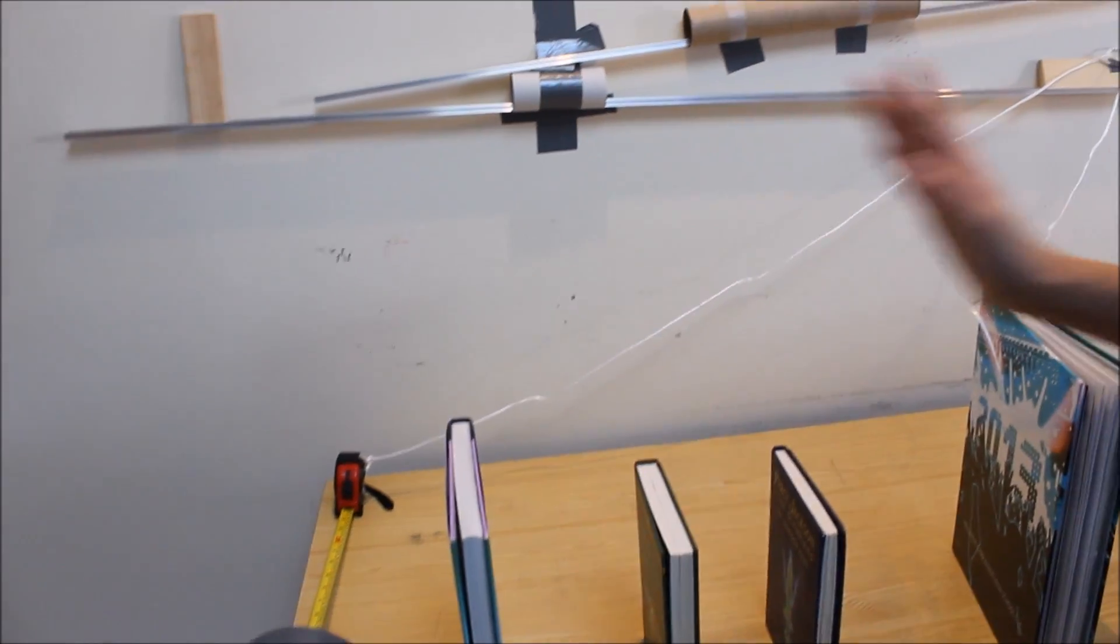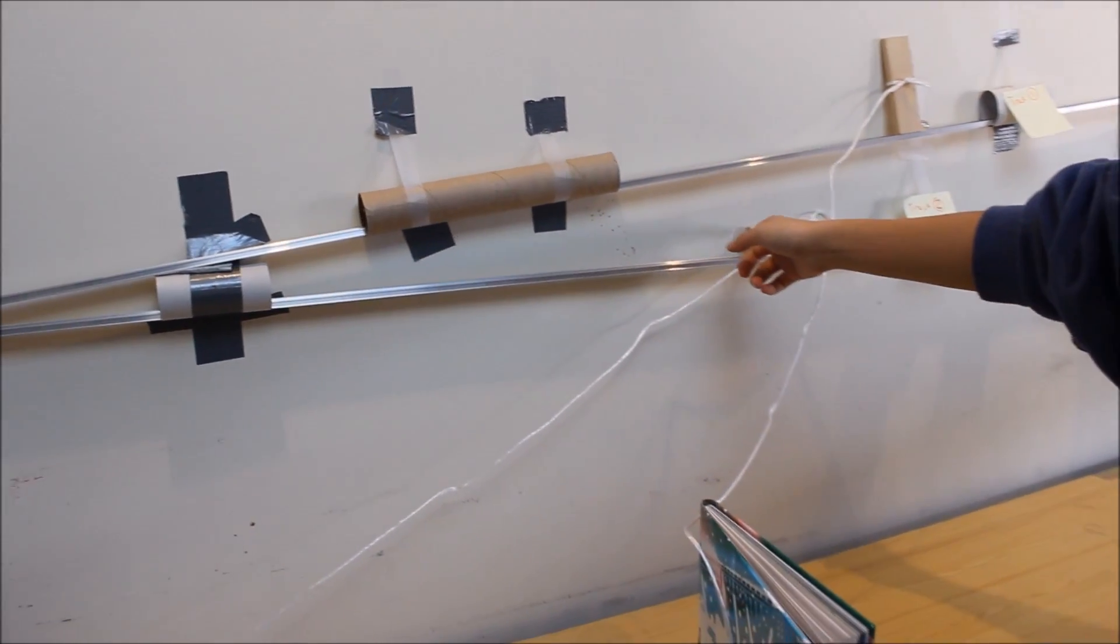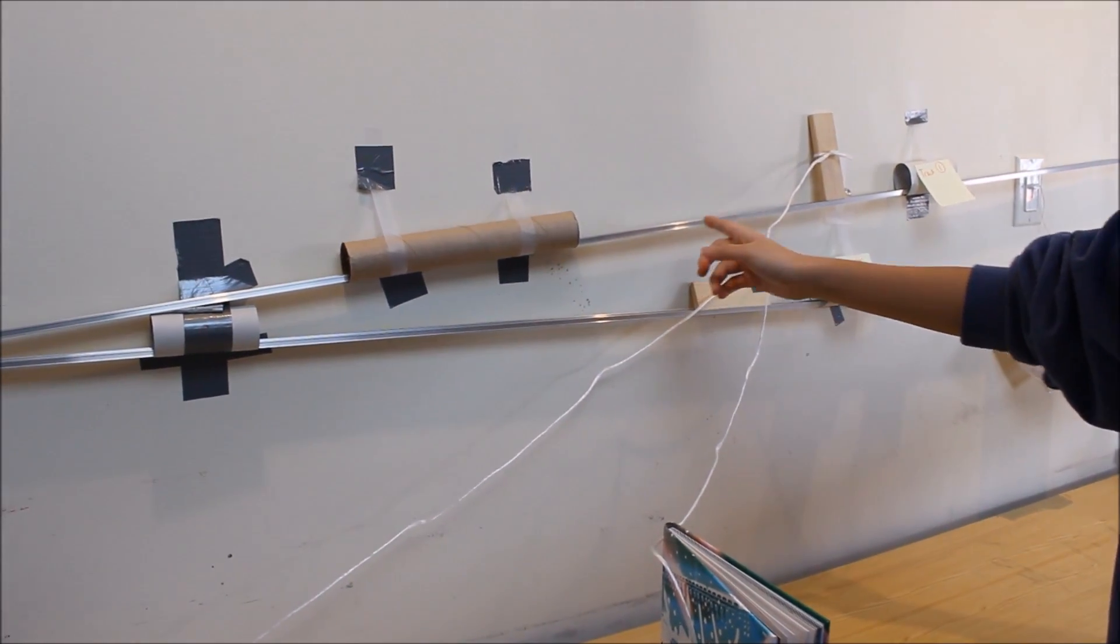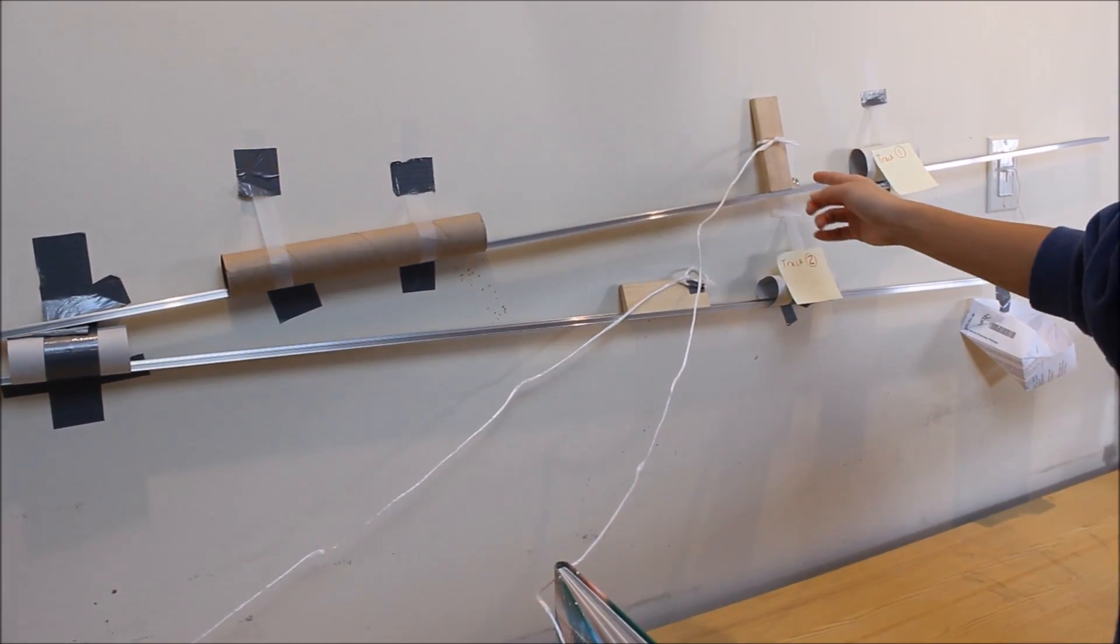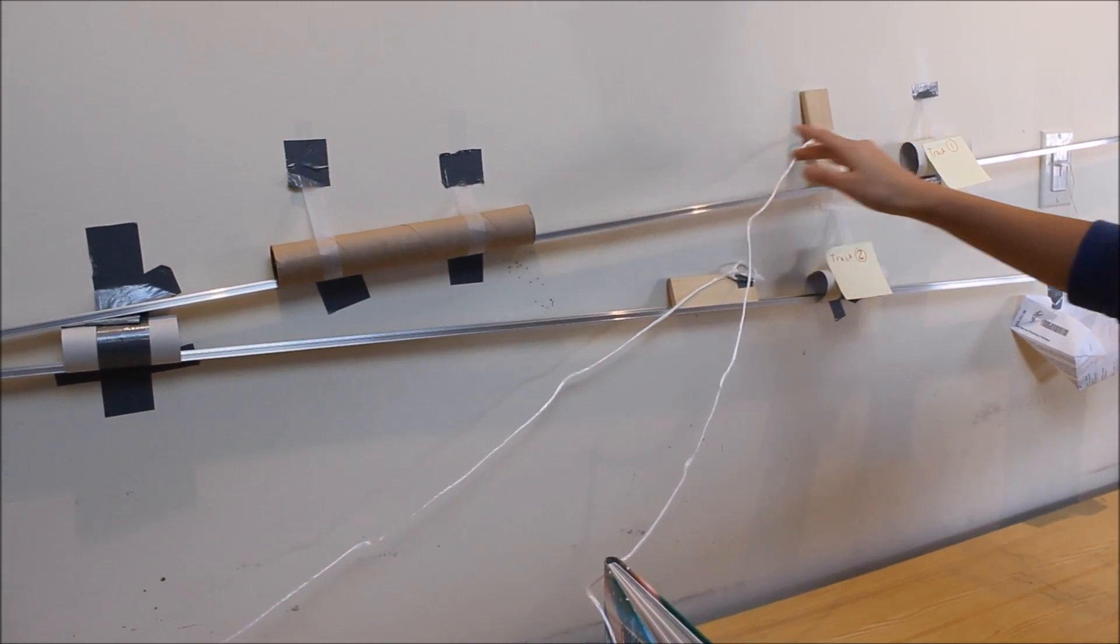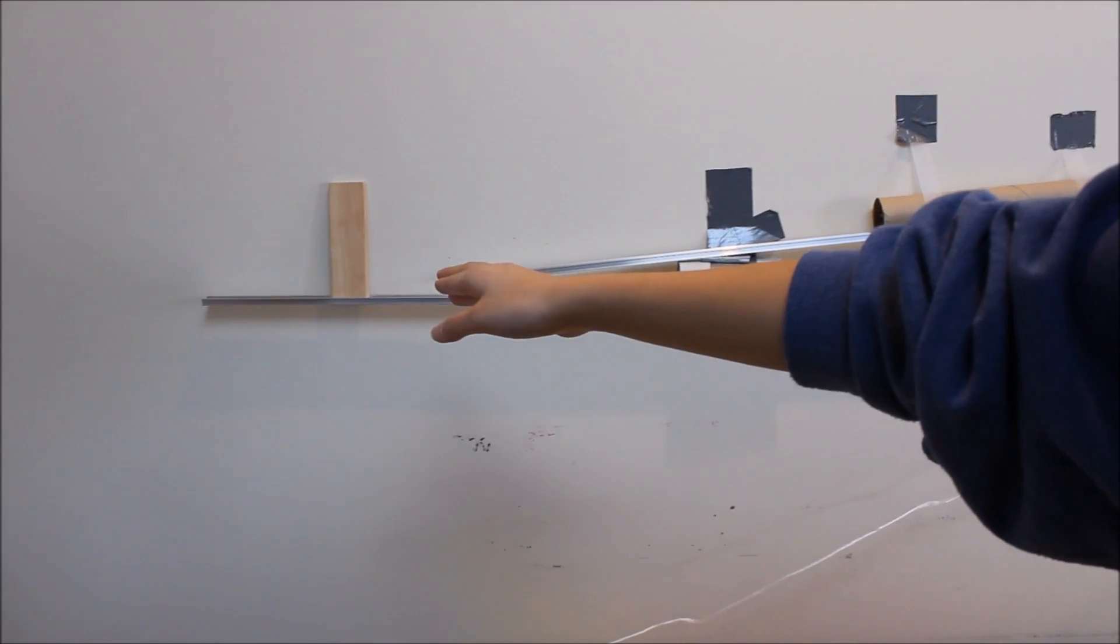So when these books fall down, this first obstacle on track one will fall away. And this obstacle on track two will fall away. As these two obstacles fall away, this marble will be able to go down track one, hitting into that to prevent it from falling off the track.